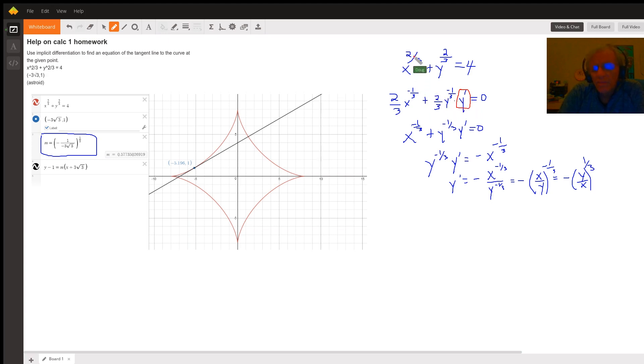So according to the power rule, the derivative of x to the two-thirds is two-thirds x to the minus one-third plus two-thirds y to the minus one-third times y prime chain rule equals the derivative of four is zero.